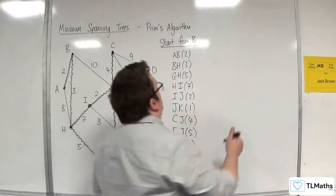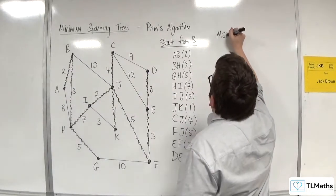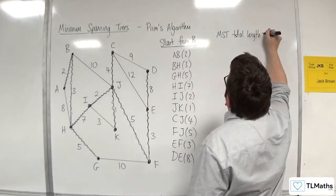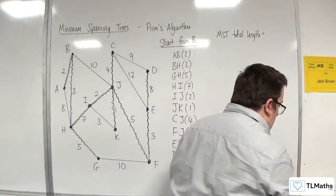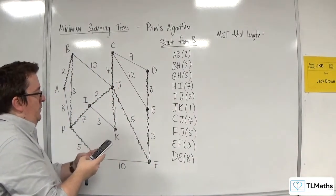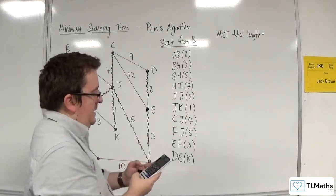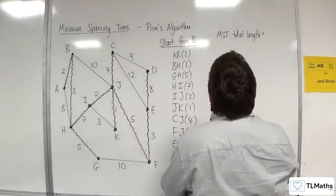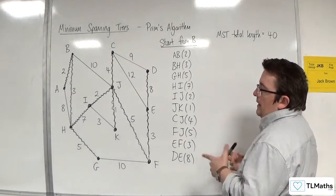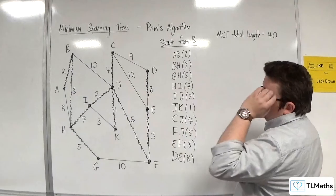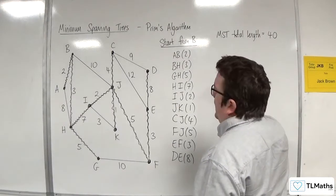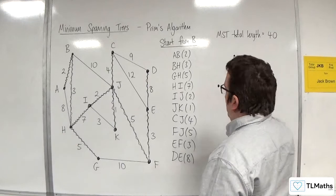So minimum spanning tree, total length. Let's count that up. We've got 2 plus 3 plus 5 plus 7 plus 2 plus 1 plus 4 plus 5 plus 3 plus 8, so 40. That's the minimum spanning tree's total length. And if I was asked to draw the minimum spanning tree for it, I will aim to. Let's see how good this goes.